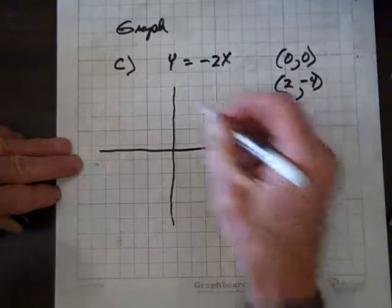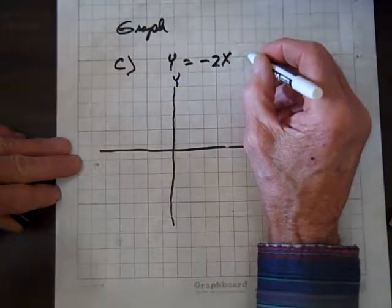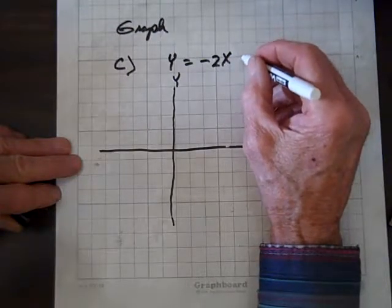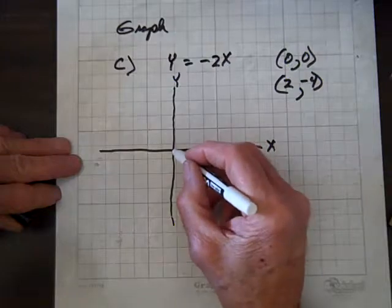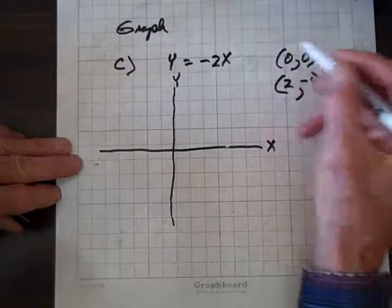We'll graph this. Notice the y-intercept is zero. So the x and y-intercepts both occur at the same point zero. That's why we have that zero zero there. There's no constant term out here.